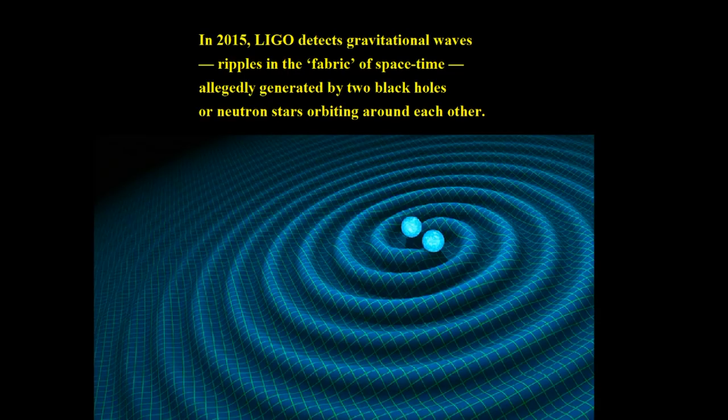Here we have another confirmation of relativity. In 2015, LIGO detected gravitational waves — allegedly ripples in the fabric of space-time — generated by two black holes or neutron stars orbiting around each other. They detected these gravitational waves that came all the way to Earth and said they know for a fact, because of their power, that they came from the collision or merging of two black holes or neutron stars.